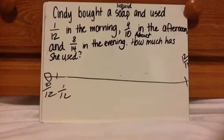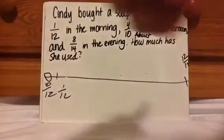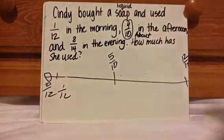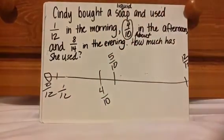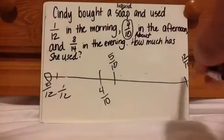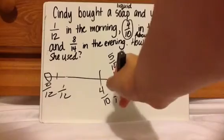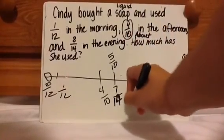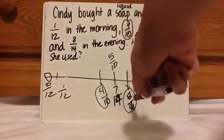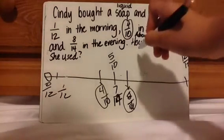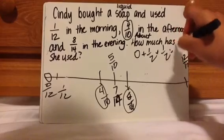Now 4 tenths in the afternoon. Imagining the number line in tenths: 0 tenths on the left, 10 tenths on the right, so halfway is 5 tenths. She used 4 tenths — right around here, so she used about half in the afternoon. And 8 fourteenths in the evening: 0 fourteenths on the left, 14 fourteenths on the right, halfway is 7 fourteenths. She used 8 fourteenths — right around here, which is also about half.